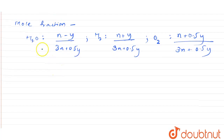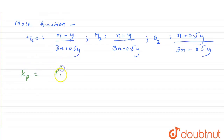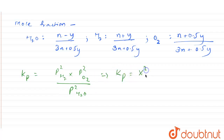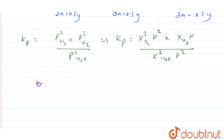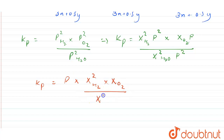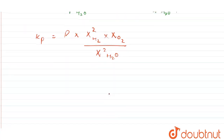Putting these into the expression for Kp: Kp = [P(H₂)² × P(O₂)] / P(H₂O)². This equals Kp = [x²(H₂) × p × x(O₂) × p] / [x²(H₂O) × p²], which simplifies to Kp = p × [x²(H₂) × x(O₂)] / x²(H₂O), where x denotes the respective mole fractions.